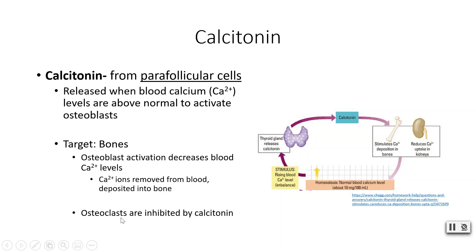Recalling the skeletal system, osteoclasts normally break down bones, which would increase blood calcium levels. Since blood calcium is already high, we don't want that, so another function of calcitonin is to inhibit osteoclast activity, preventing opposition to the calcium-lowering process.